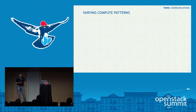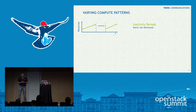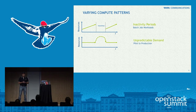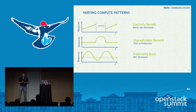These are the varying compute patterns we have seen. Batch job workloads generally run during low peak or usually at night — we see big inactivity periods for those. Then there are certain requirements with unpredictable demand — for instance when you want to take an application from pilot to production there's a surge. Generally we take that peak value and assign those resources assuming they'll be used throughout, but that's not the case with certain workloads.